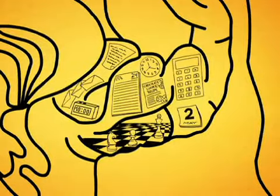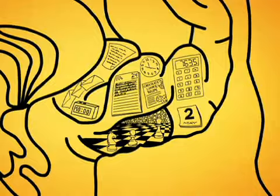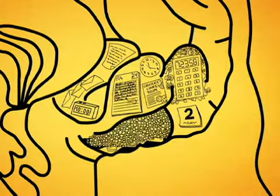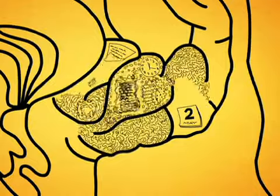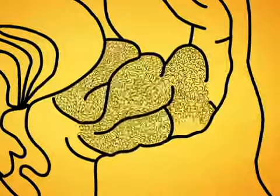Next, the disease creeps toward the front of the brain, where logical thought takes place. Very gradually, a person begins to lose the ability to solve problems, grasp concepts, and make plans.